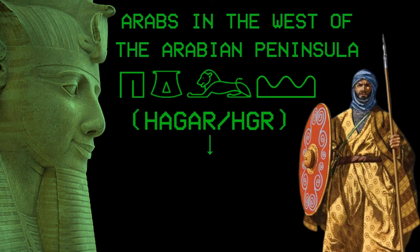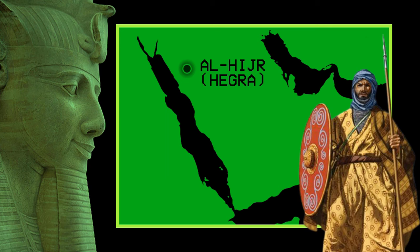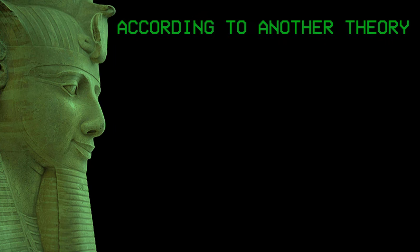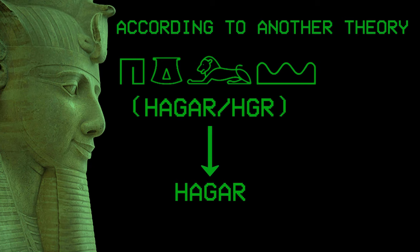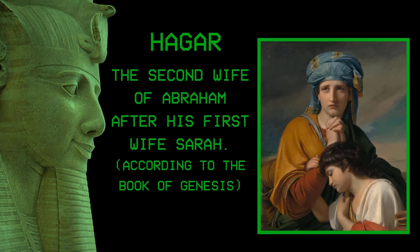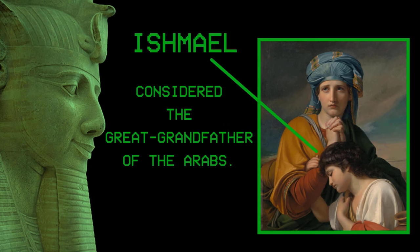They called the Arabs in the west of the Arabian Peninsula the name Hagar, which may be taken from the name Al-Hajj, an archaeological area in the northwest of the Arabian Peninsula where powerful Arab tribes lived in ancient times, in a strategic location on the trade routes between the Arabian Peninsula, Mesopotamia, the Levant, and Egypt. Or according to other experts, this name may be derived from the name Hagar, who according to the Book of Genesis was the second wife of Abraham after his first wife Sarah, who bore him his son Ishmael, considered the great grandfather of the Arabs.